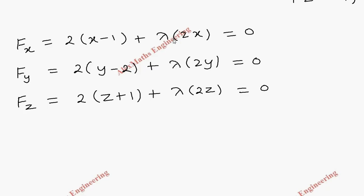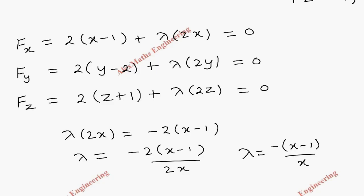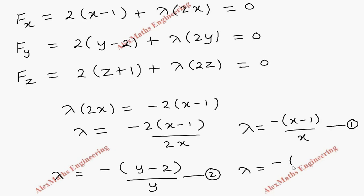As per the working procedure, we equate ∂F/∂x, ∂F/∂y, and ∂F/∂z to zero and find λ in each case. From the first equation: λ = −(x−1)/x. From the second: λ = −(y−2)/y. From the third: λ = −(z+1)/z.